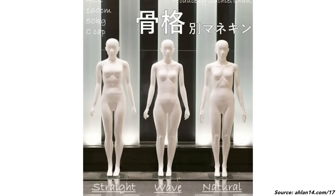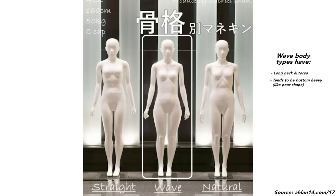Before we get into specific celebrity examples, we'll go through the characteristics of each body type first, because I want to leave comparing these celebrity examples to their verified Kibbe IDs to the end. Now, if you've answered mostly B in the questions, then you belong to the wave type. This type has a long neck and a long torso, and is bottom heavy. Shape-wise, if we were to compare to a fruit-shaped body, it would be a pear shape.